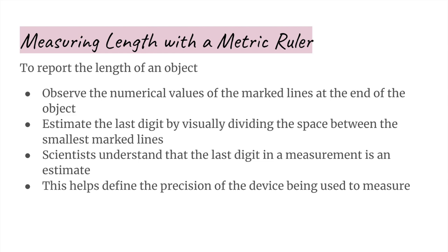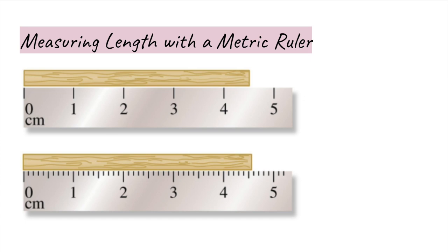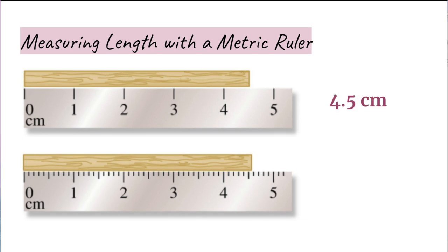For example, in the first image, the end of the object is between four centimeters and five centimeters. We estimate that the end of the wooden object is halfway between the four centimeter and five centimeter marks, so the value would be reported as approximately 4.5 centimeters. Note that 4.5 centimeters is a more precise and accurate measurement than simply saying it's about four centimeters or about five centimeters.